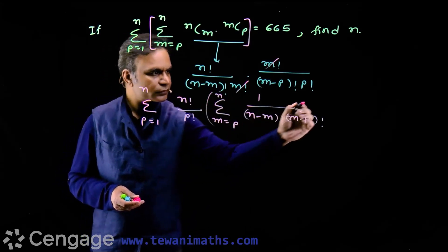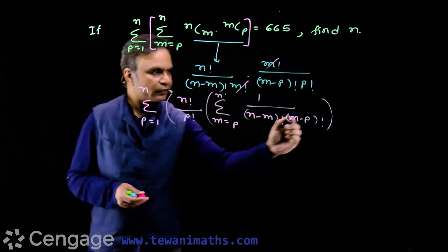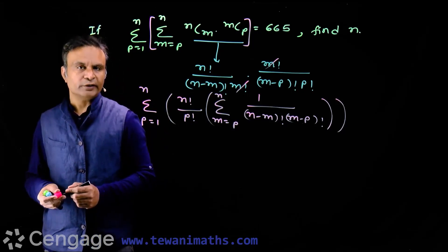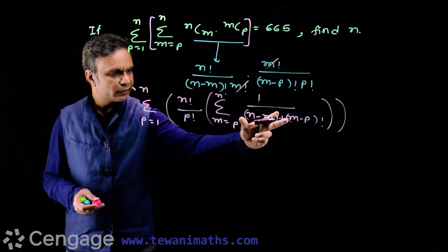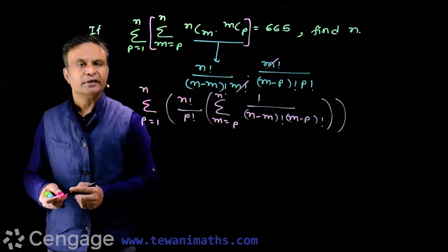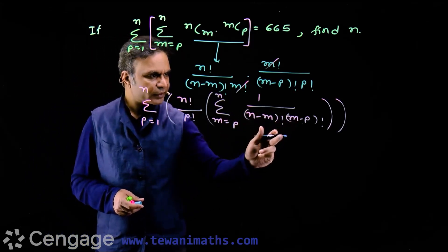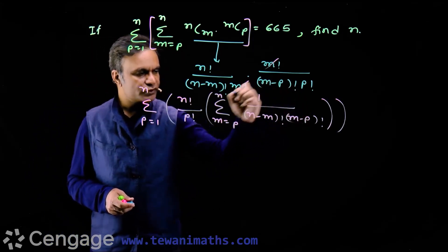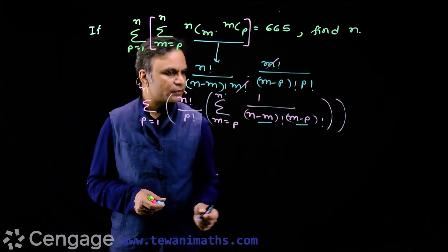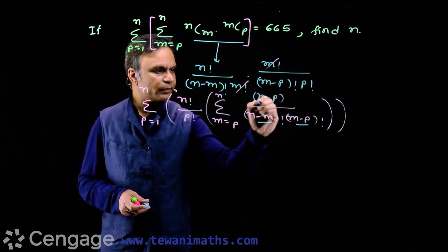Basically we have this inner sigma, then we multiply it with n factorial over p factorial, and then apply the outer sigma for p equal to 1 to n. We will evaluate this inner sigma first, multiply it with the outer factor, and then apply the outer sigma. To evaluate this inner sigma, I need to create one binomial coefficient. For that, I add n minus m and m minus p, and this sum is n minus p. So in the numerator, I write (n minus p) factorial.